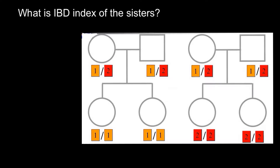First, what values may we have in the IBD index system? We can have a value of 0 if we compare one locus of one person with the same locus of another person and none of the alleles are the same. The value can also be 1 if we compare the locus and find that one of the alleles is the same in both people.